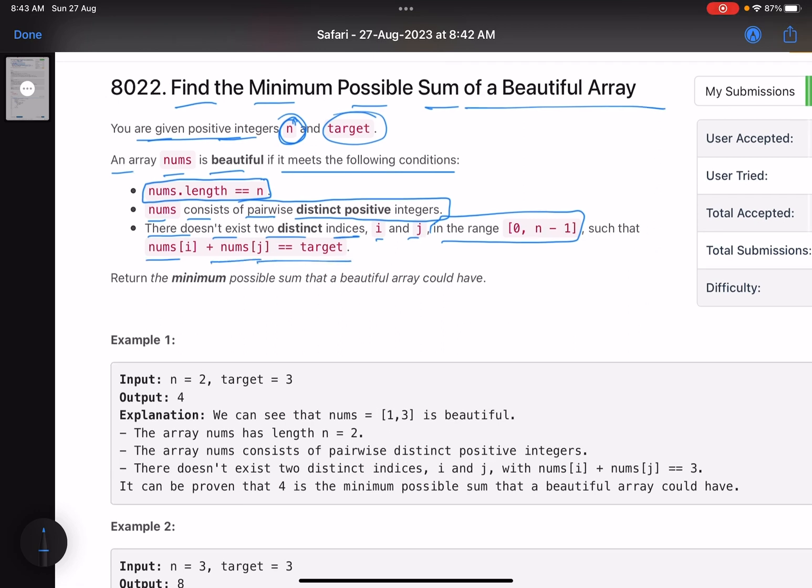there doesn't exist two distinct indices i and j in the valid range such that nums[i] + nums[j] equals target. Return the minimum possible sum that a beautiful array could have. So I am given n and target, and I have to find the sum of an array of length n. Basically I have to form that array. The constraint is the length has to be n and you should not have any two integers in your array whose sum equals the target.